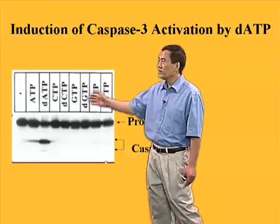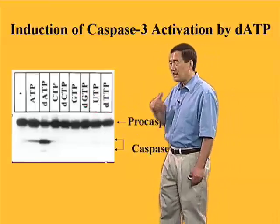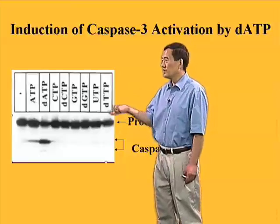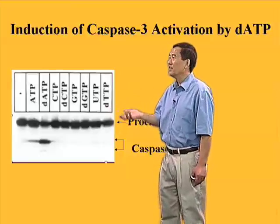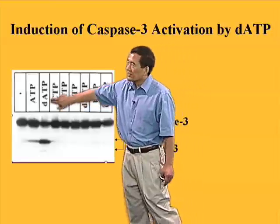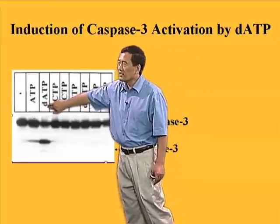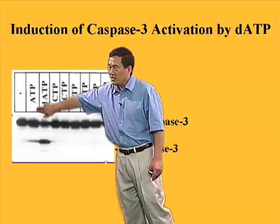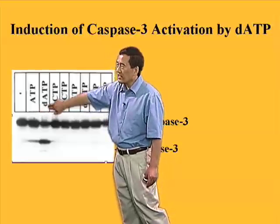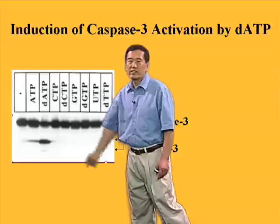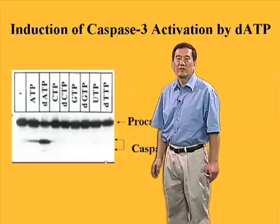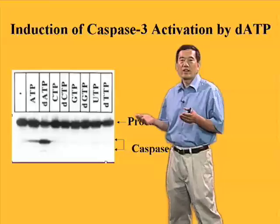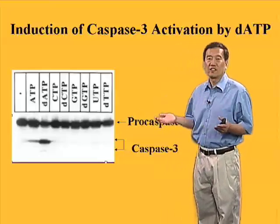But in one of these experiments, when we added small nucleotides into the S100 fraction, we found — quite surprisingly — that either ATP, or even better, deoxyATP, is able to accelerate caspase-3 activation in cell extracts made from living cells.